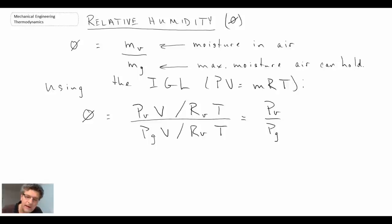And what we get is a ratio of the pressures, the amount of the pressure associated with the moisture in the air divided by the max moisture which we get off of the steam table, and that would be the saturation pressure at the given temperature.